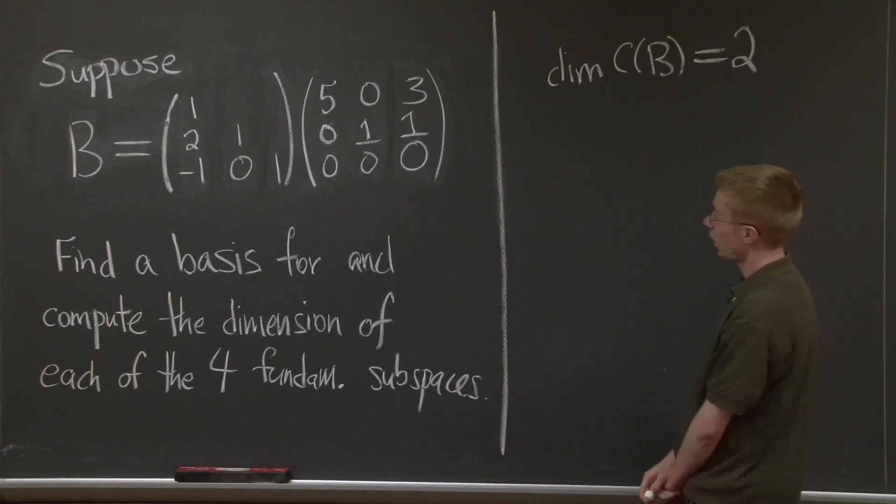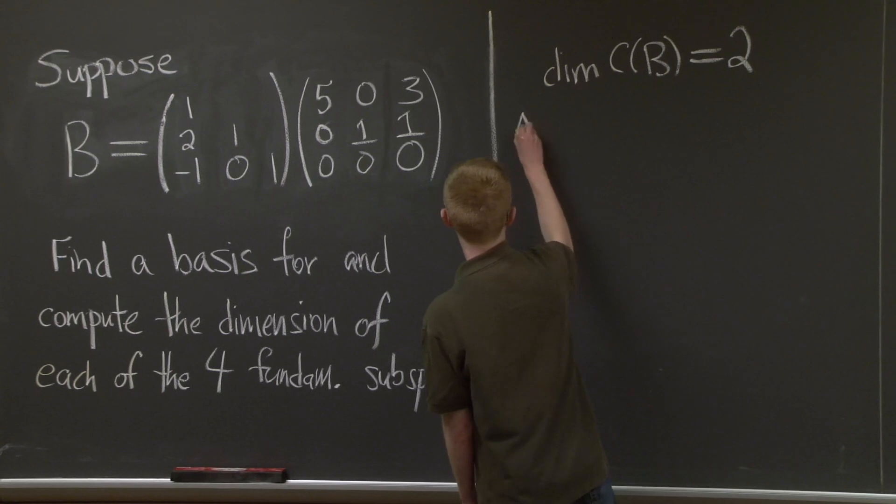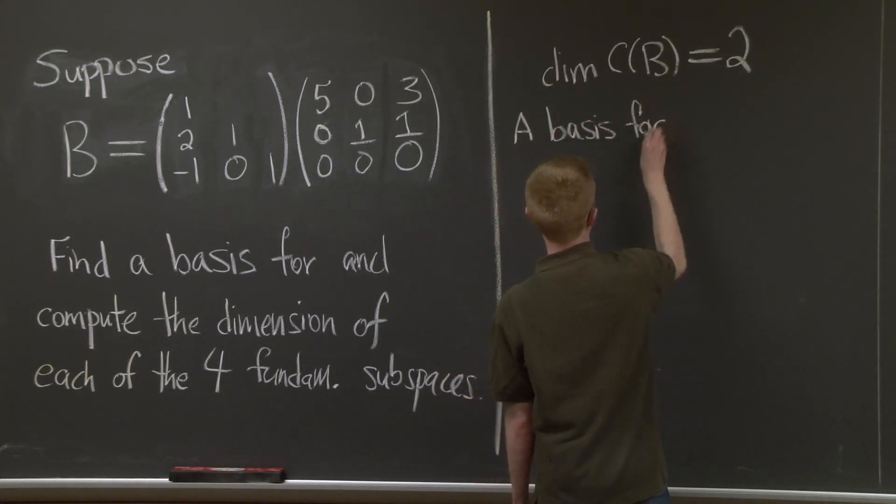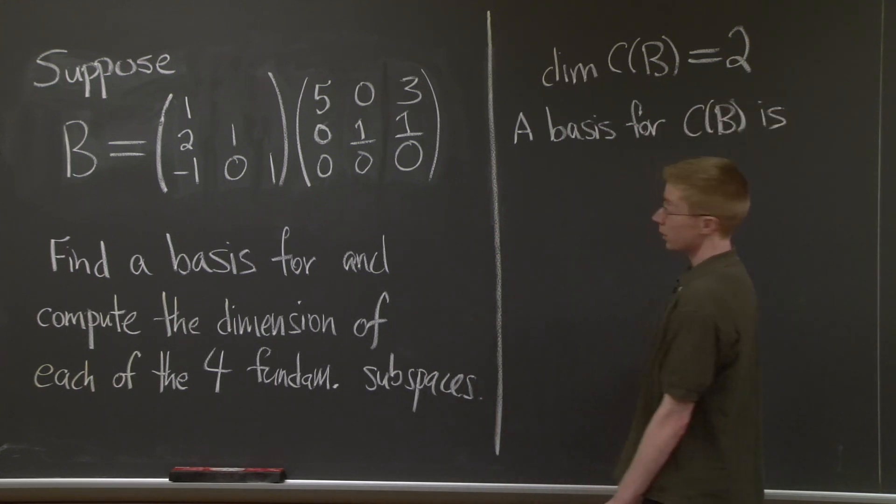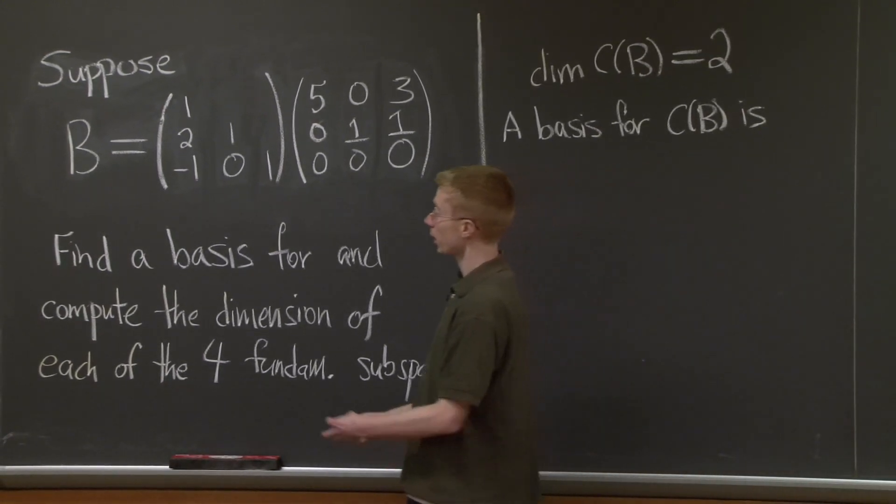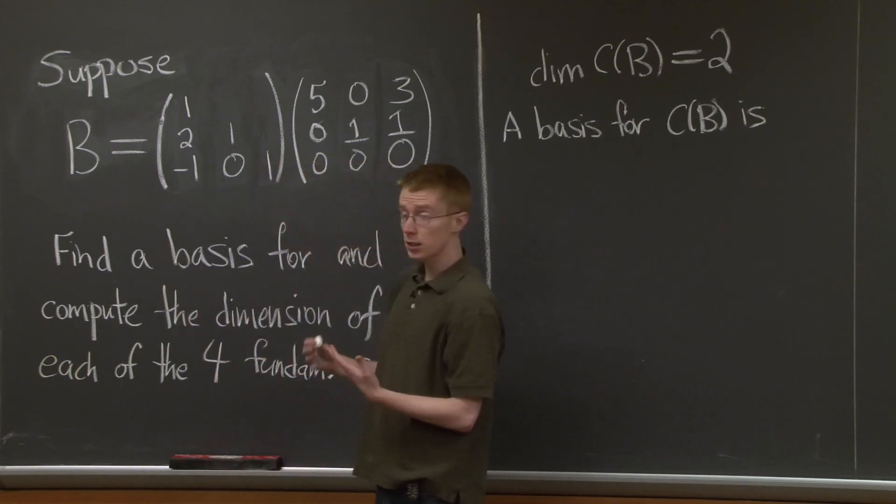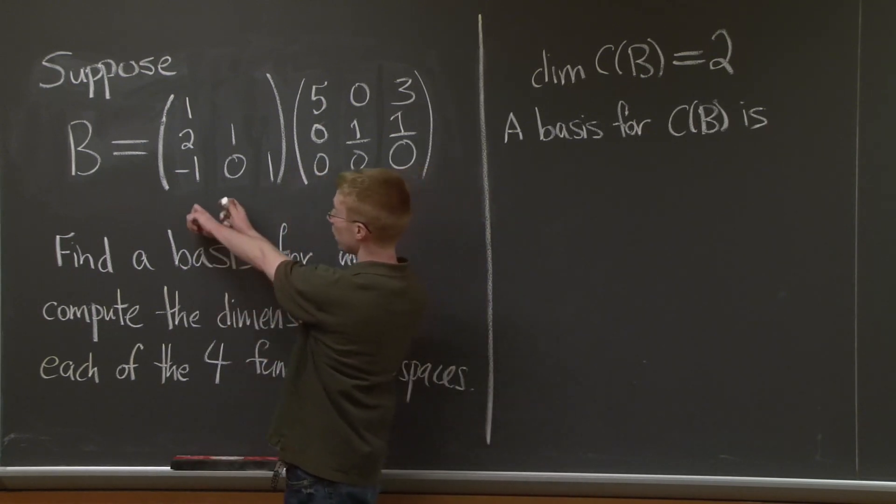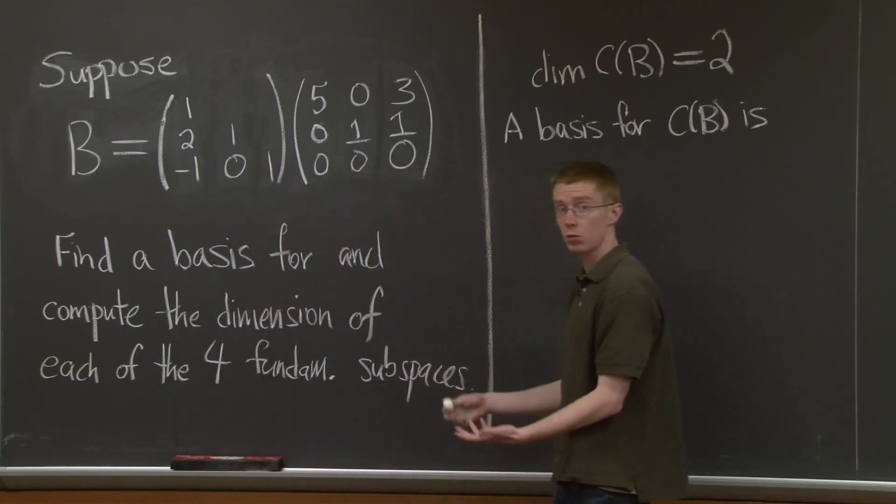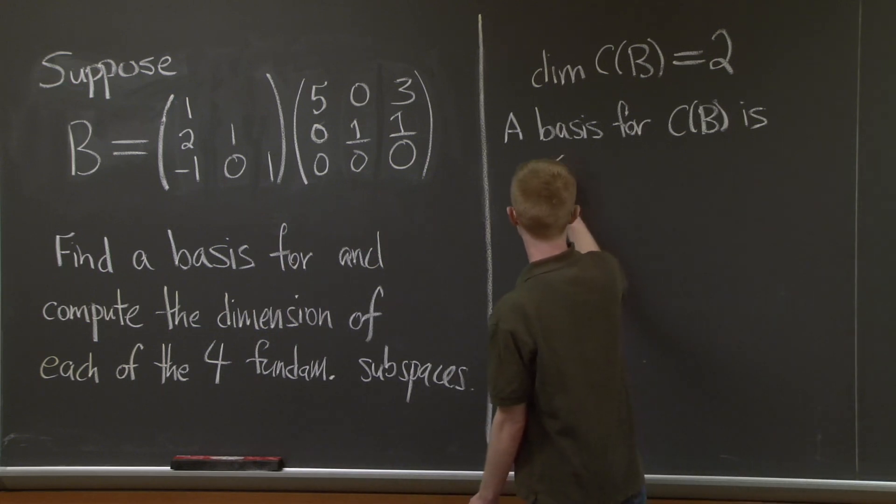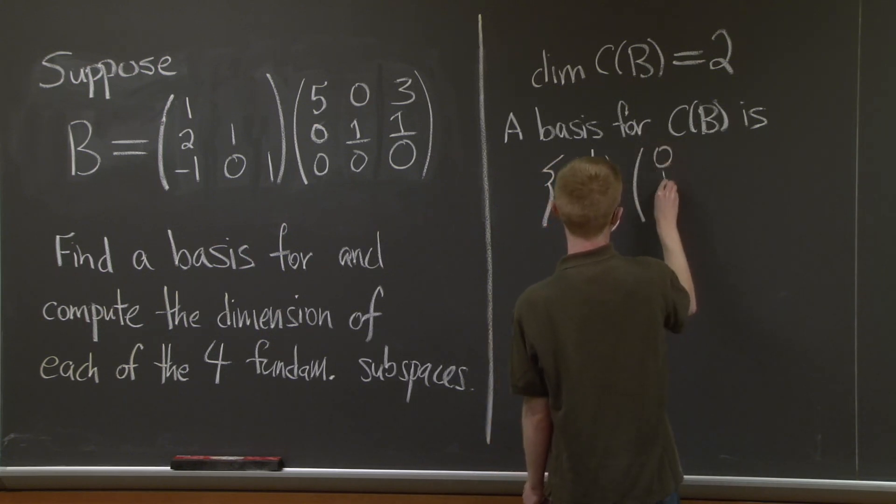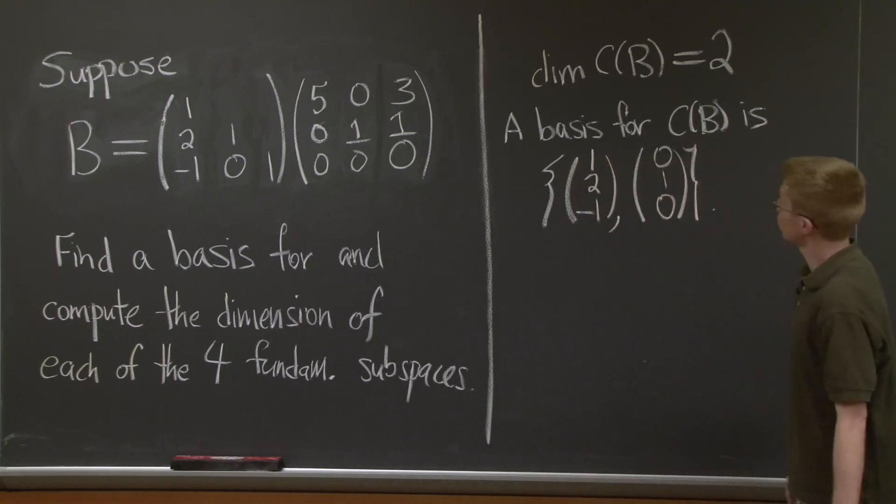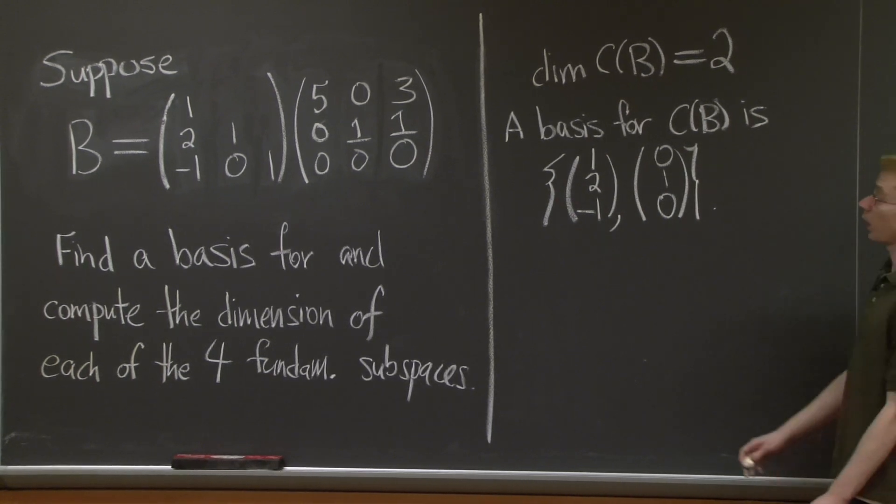Now, how do we find a basis for the column space? In lecture, Professor Strang started with a matrix B, did elimination on it, and then took the pivot columns in the original matrix. That works. You can also take the pivot columns in the L matrix. You can see by multiplying this out that it will amount to essentially the same thing. So a basis for this column space, I can just take these two pivot columns of my L matrix: (1, 2, -1) and (0, 1, 0). So there's the dimension of and the basis for the column space of B.